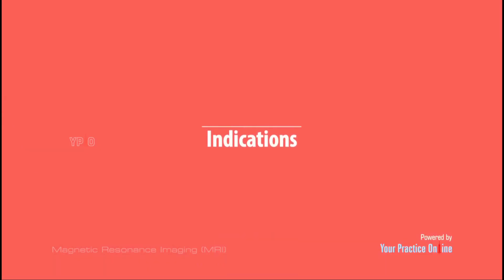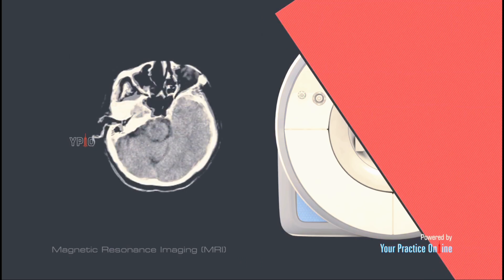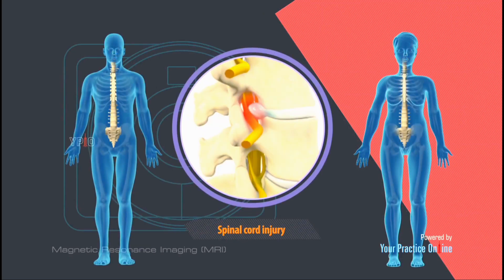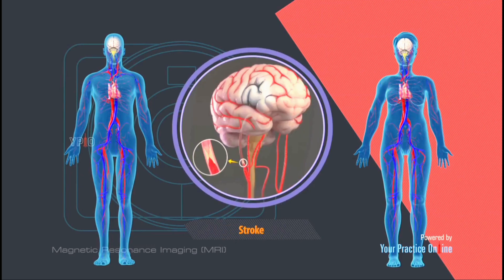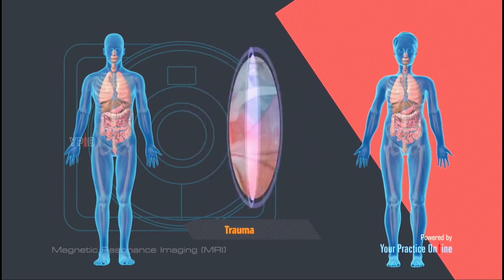Magnetic Resonance Imaging is used for the diagnosis of various medical conditions such as brain anomalies, spinal cord injury, nerve damage, stroke, multiple sclerosis, cancer, and trauma.